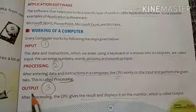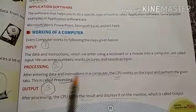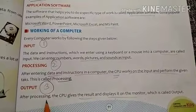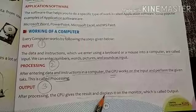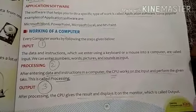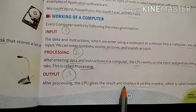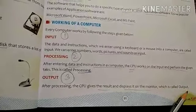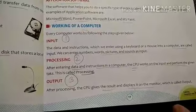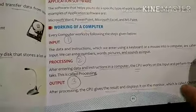The third step is output. After processing is complete, the CPU gives the result. The CPU will provide you the final result and it is displayed on the monitor, which is called output. Your final result is the output and it will be visible to you on the monitor screen.